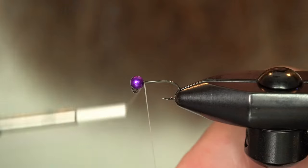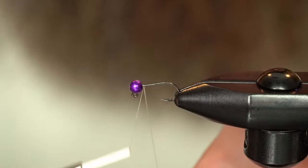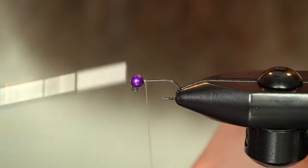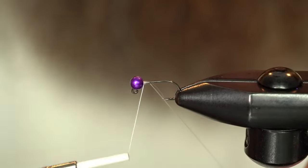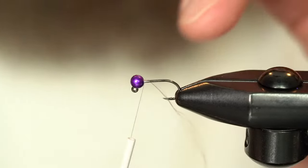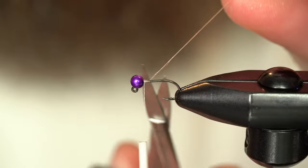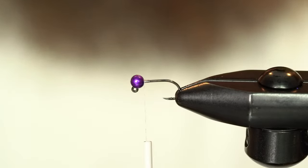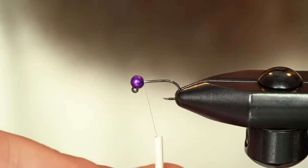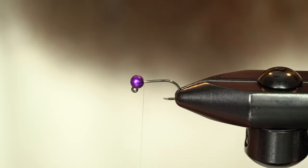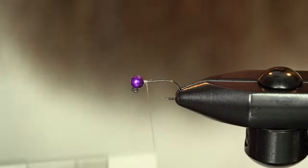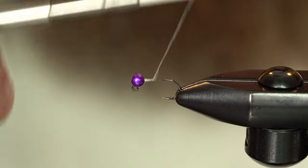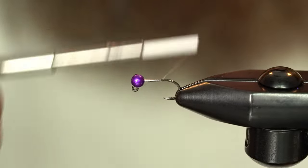Start my thread right behind the bead here. Secure that and lock it in place. Build a little bit of a taper. Then snip out my tag there. Even my thread up. And I'm going to work my thread down to just beyond the hook point.